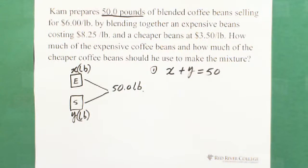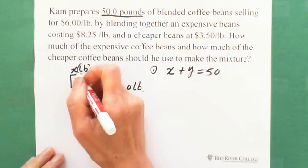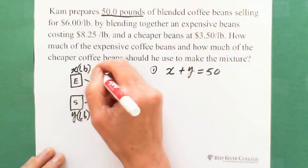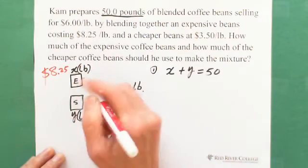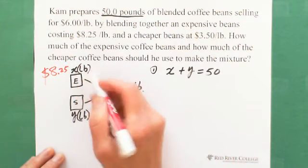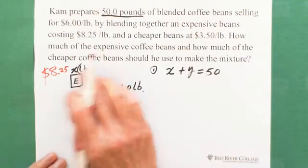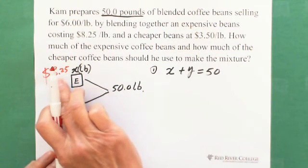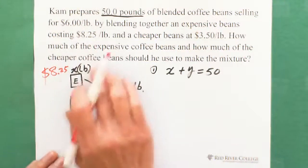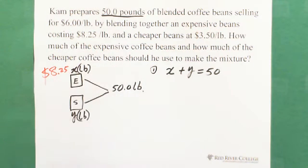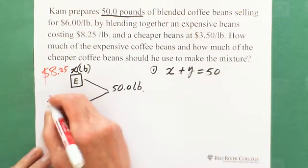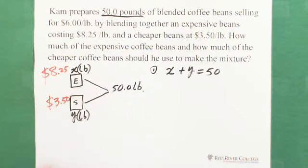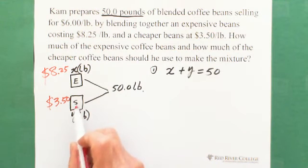And then we can label the price. After we done the first equation we can label. What the expensive one? $8.25 per pound. Each pound, you have X pound, for example you have 20 pounds, right? So then multiply the unit price, you got the total price for buying the expensive one. And the cheaper one is $3.50, so $3.50 for each pound for cheaper one.